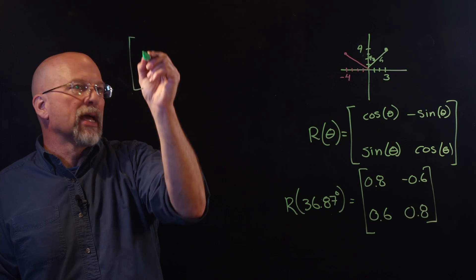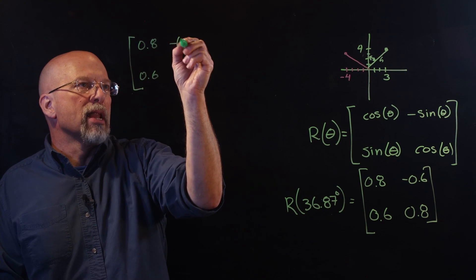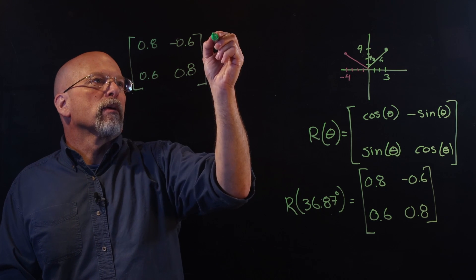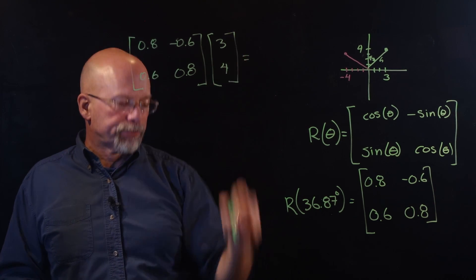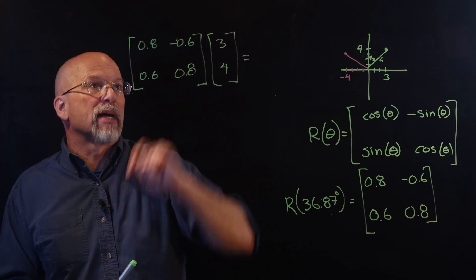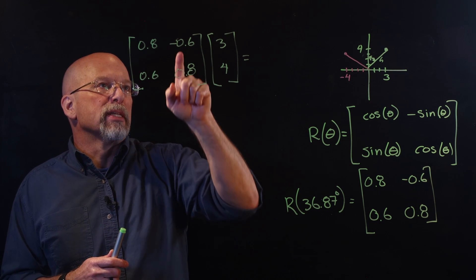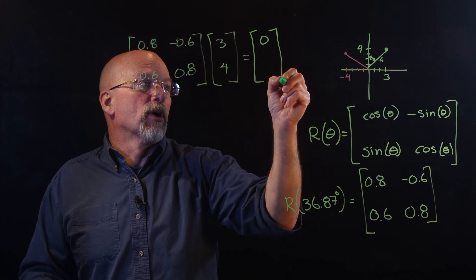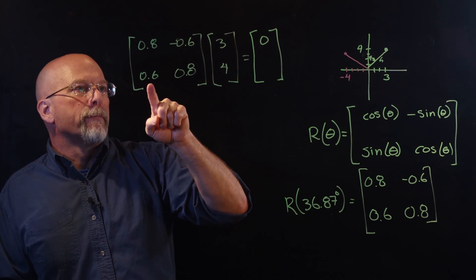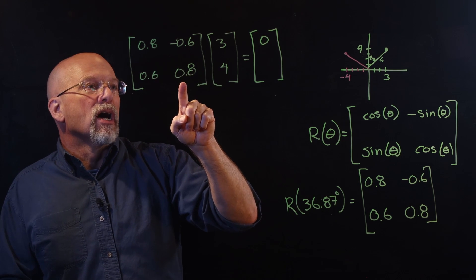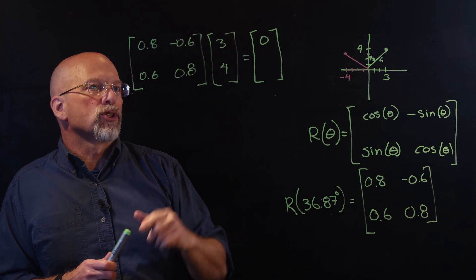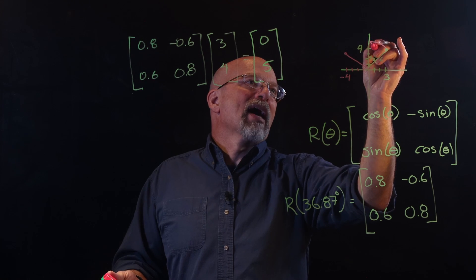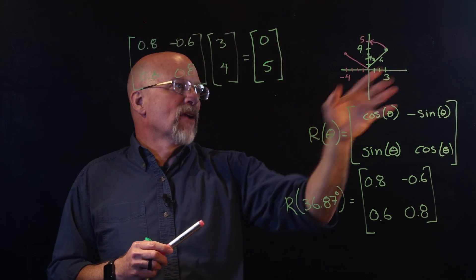So the rotation matrix is [0.8, −0.6; 0.6, 0.8]. Multiplying by [3, 4]: the top element is 0.8×3 + (−0.6×4) = 2.4 − 2.4 = 0. The bottom element is 0.6×3 + 0.8×4 = 1.8 + 3.2 = 5. The result is [0, 5], confirming the rotation aligned the vector with the y-axis at length 5.